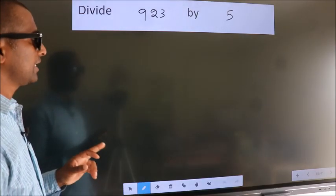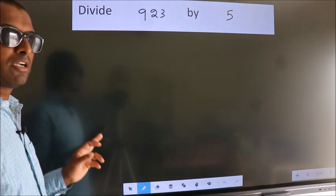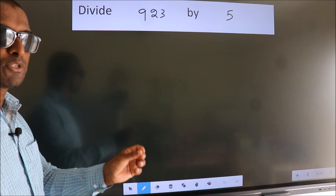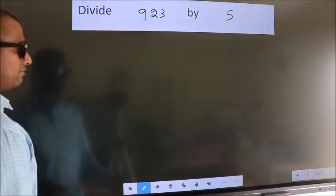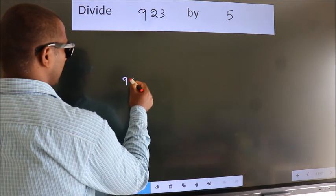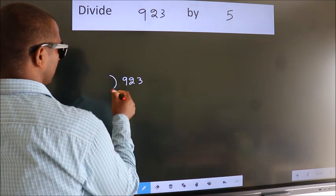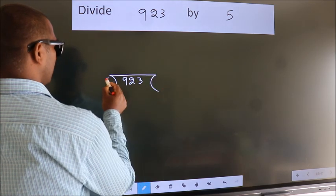Divide 923 by 5. To do this division, we should frame it in this way. 923 here, 5 here.